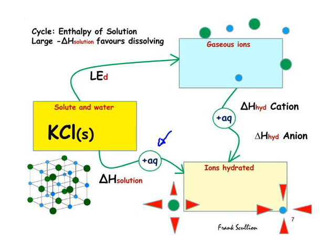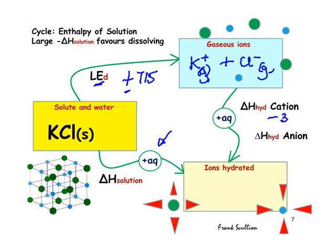We're going to take the solid potassium chloride and create gaseous potassium ions and gaseous chloride ions. That is the lattice enthalpy of dissociation, and that figure has been given to us as +715 kJ/mol. The lattice enthalpy of formation would have a negative value — it's exothermic — whereas lattice enthalpy of dissociation will always be endothermic, requiring energy. We've been given the enthalpy of hydration of the cation (the positive ion) as −322 kJ/mol.